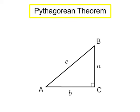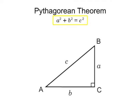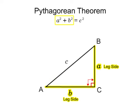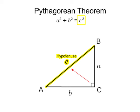The Pythagorean Theorem is an equation that describes the relationship between the three sides of a right triangle. The theorem states that the sum of the squares of the two leg sides is equal to the square of the hypotenuse. The legs are the sides next to the right angle, and the hypotenuse is the side opposite the right angle. When a triangle has one angle equal to 90 degrees, it's called a right triangle, and the Pythagorean Theorem can be applied.